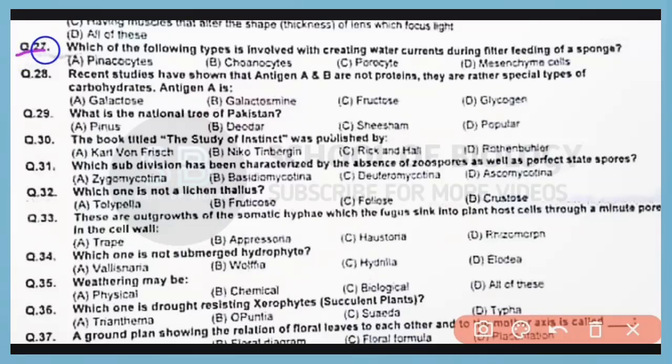Question number 27. Which of the following types is involved with creating water currents during filter feeding of sponge? Correct answer is option B. Choanocytes are responsible for creating water currents.